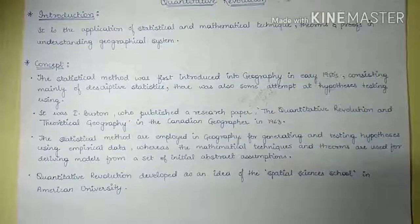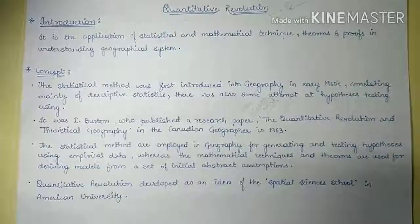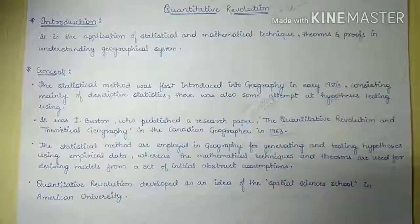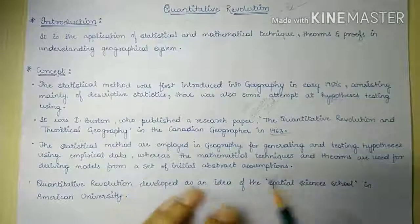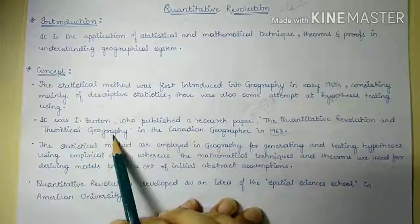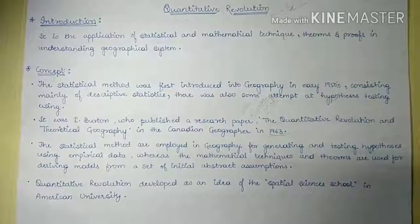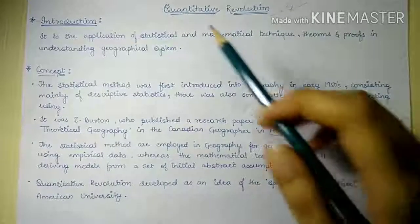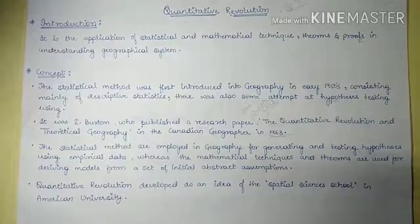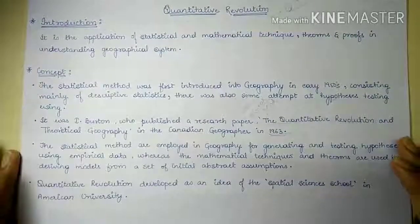The main growth in the field of quantitative revolution can be seen during 1963, when a Canadian geographer named Ian Burton published a research paper titled 'The Quantitative Revolution and Theoretical Geography.' After the publishing of this research paper, quantitative revolution gained attention of various geographers all around the world, and it experienced a great boom during this time.